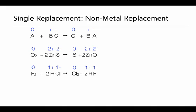Overall, single replacement reactions are a reaction between a single element and an ionic compound. In the reaction, a metal, if it's the single element, will trade places with the metal in the ionic compound. If the single element is a nonmetal, it will trade places with the nonmetal in the ionic compound.